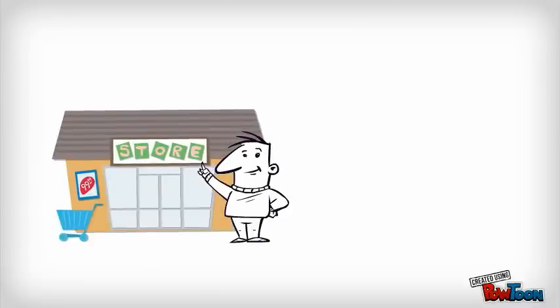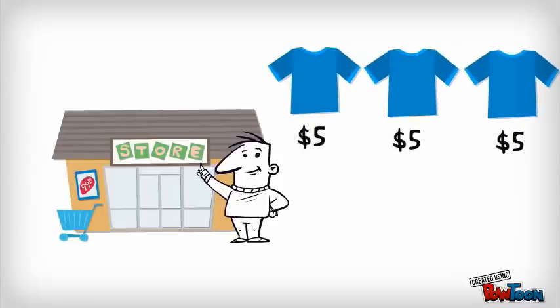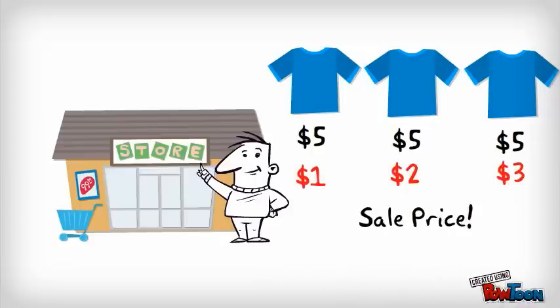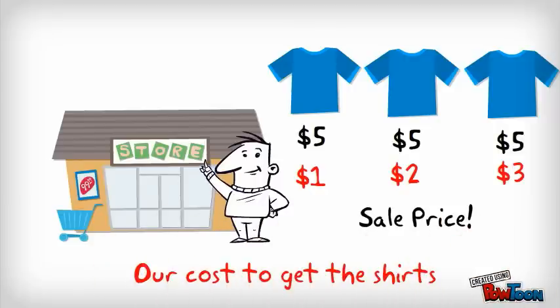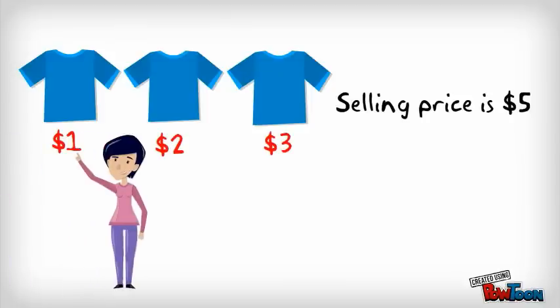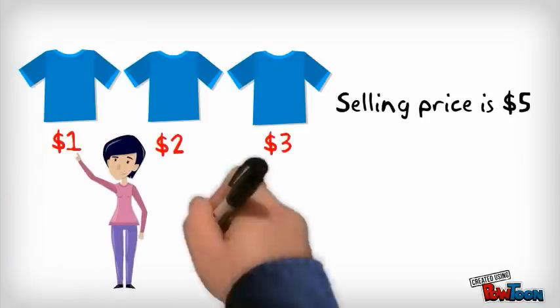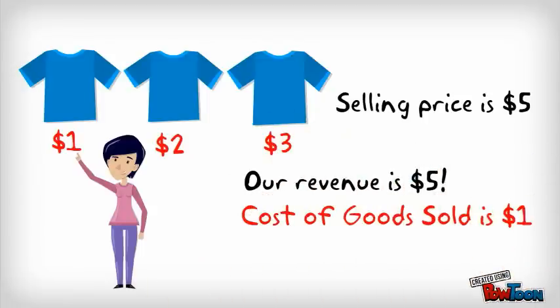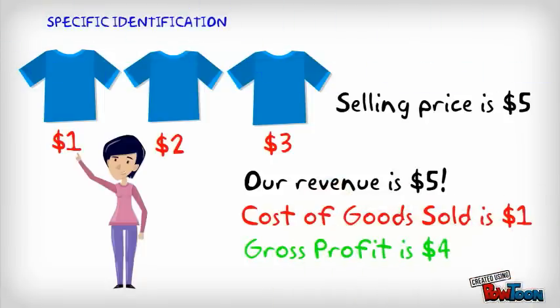Let's assume you own this store and you're selling t-shirts for $5 each. $5 is the sale price of the t-shirts. We bought the first t-shirt for $1, the second for $2, and the third for $3. This is our cost to get the t-shirts to our store. Let's assume we have three t-shirts that we sell. This lady wants to buy the first t-shirt. Our revenue is $5 because the lady has to pay $5 to get the shirt. Our cost is $1, so gross profit is $4. This method is called specific identification because we specifically identify which t-shirt the lady bought.